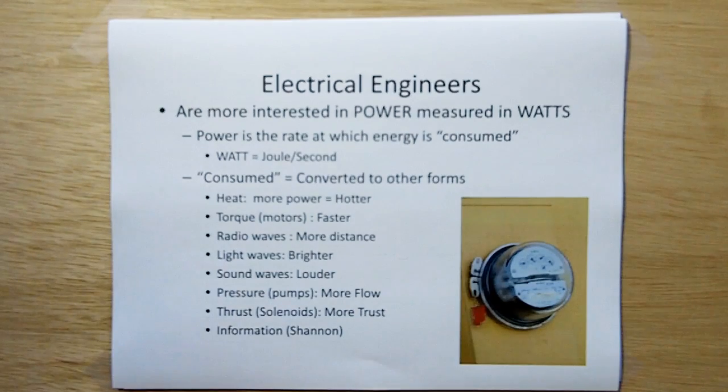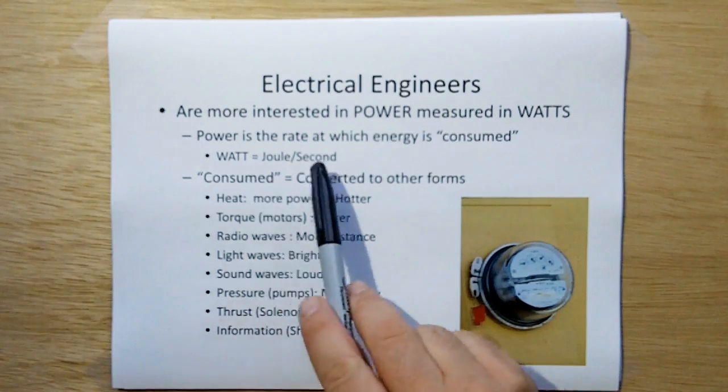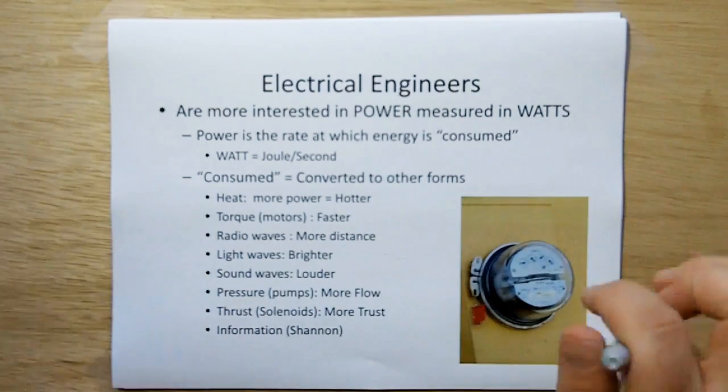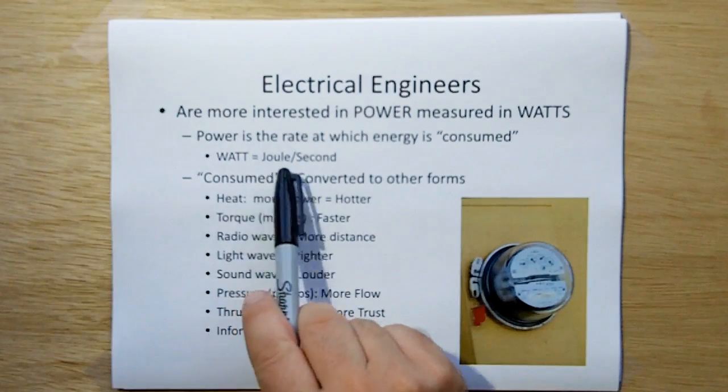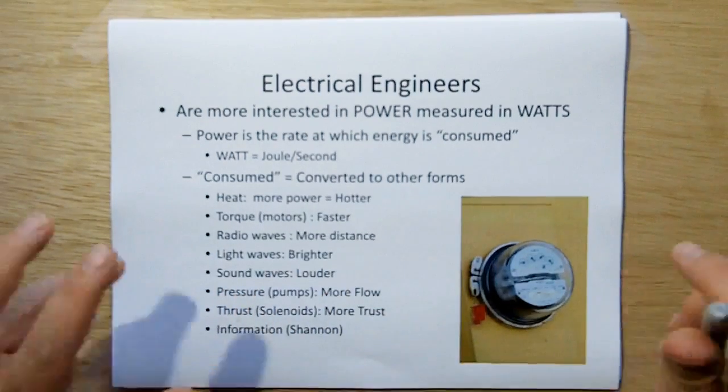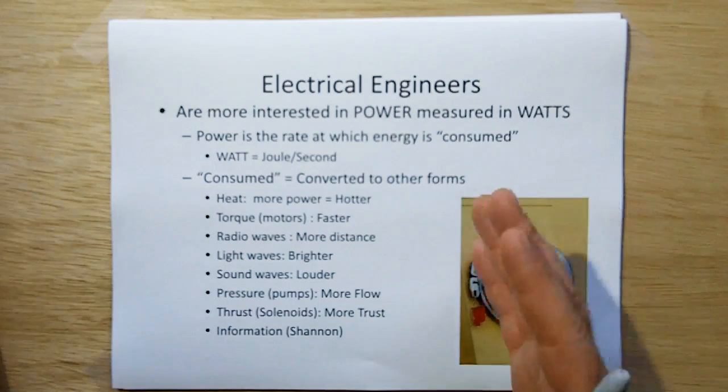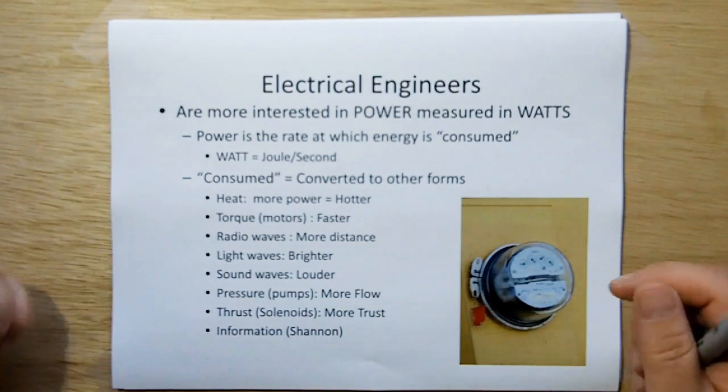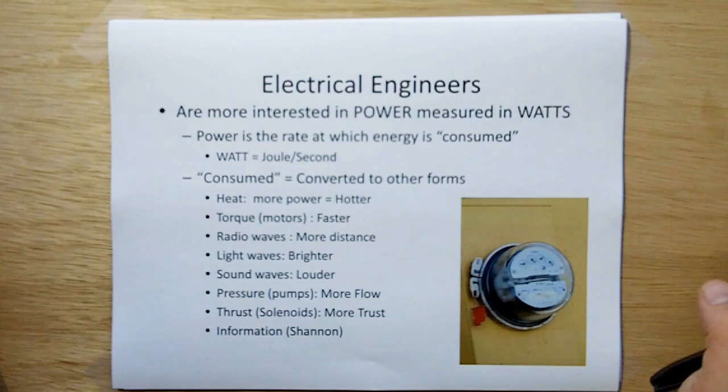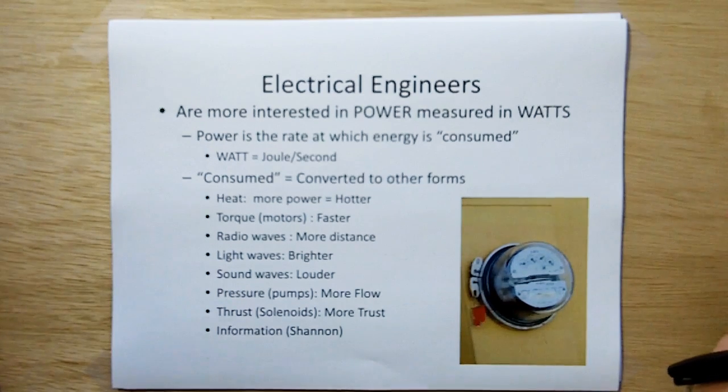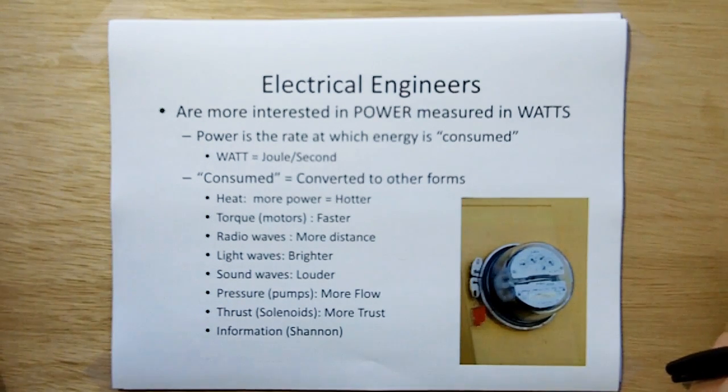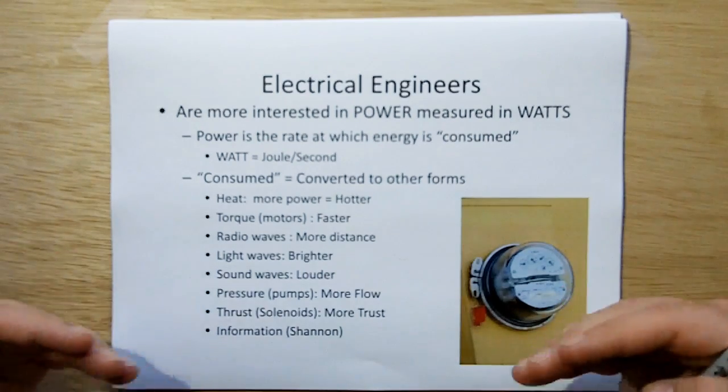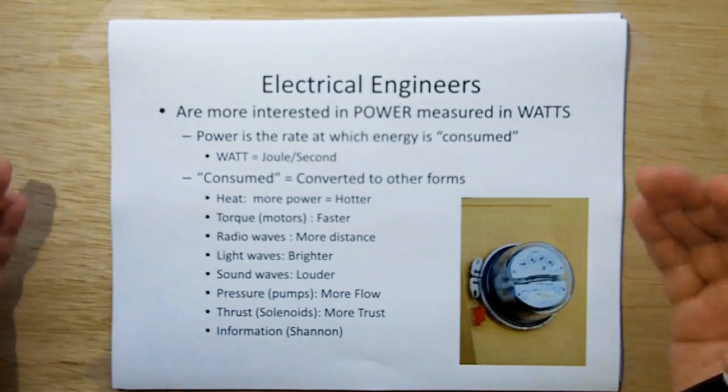Electrical engineers are usually more interested in power measured in watts. And power is the rate at which energy is consumed, which is joules, watt is joules per second. Now, consumed means converted to other forms, converted from its source into other forms like heat. It's not wrong to use the term energy consumption. We use it every day when we talk of consuming fossil fuels. And there we're saying we're not destroying energy, we're just turning it into other forms.